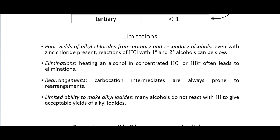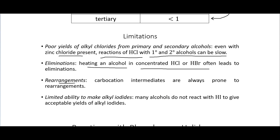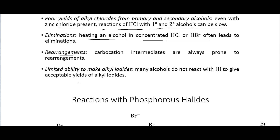Limitations of the HX reaction include poor yields of alkyl chlorides from primary and secondary alcohols — even with zinc chloride present, reactions of HCl with primary and secondary alcohols can be slow. Heating in concentrated HCl or HBr can also lead to eliminations. Additionally, carbocation intermediates are prone to rearrangements via hydride and alkyl shifts. Finally, many alcohols do not react with HI to give acceptable yields of alkyl iodides.